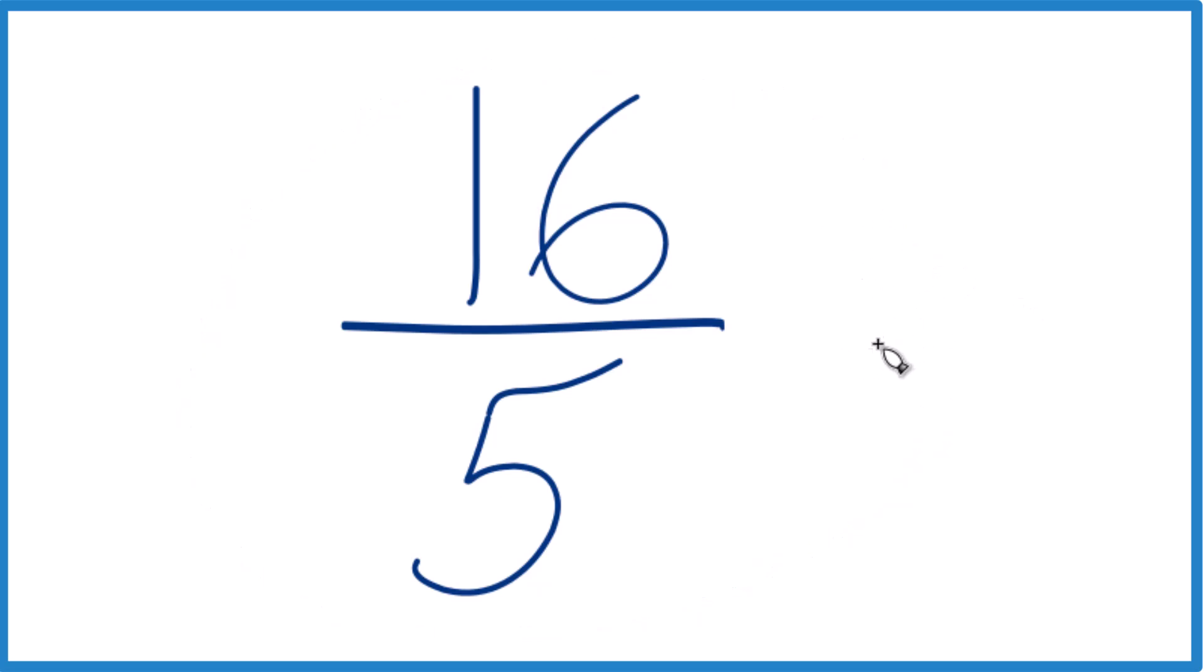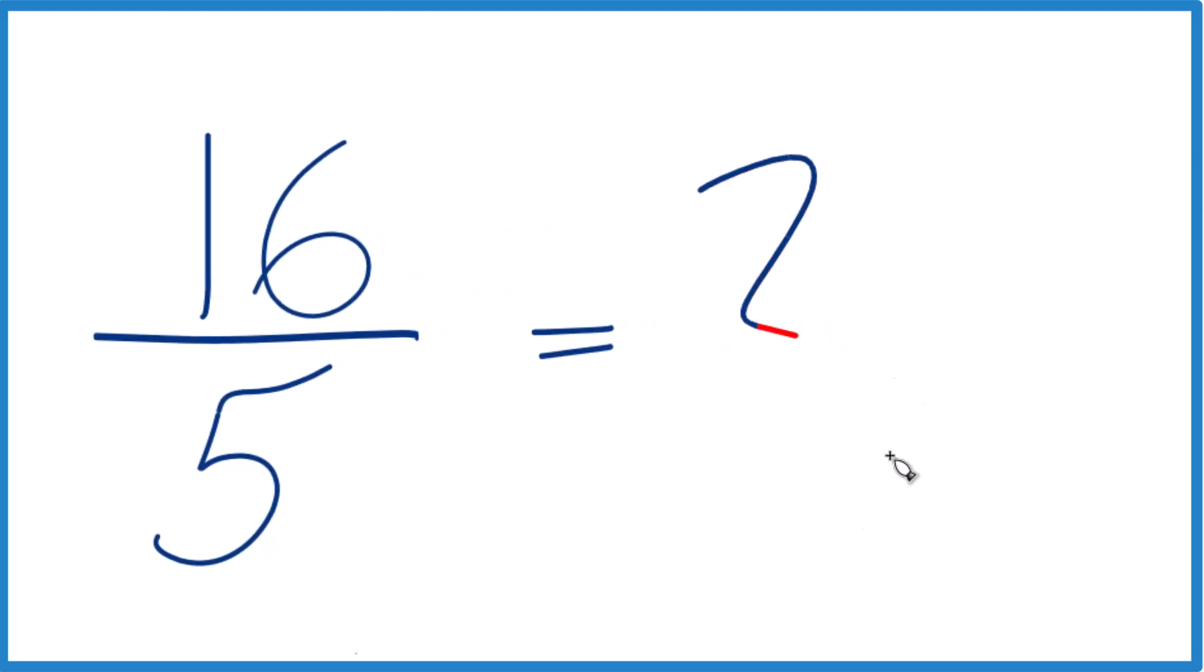But we can write it as a mixed number. 5 goes into 16. Let's see. 3 times 5, that'd be 15 with 1 left over. Just bring this 5 across. And 16 fifths, that equals the mixed number 3 and 1 fifth.